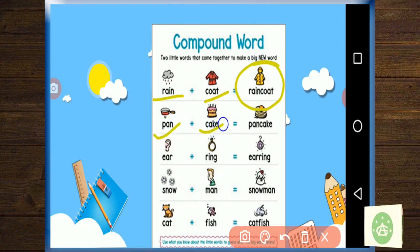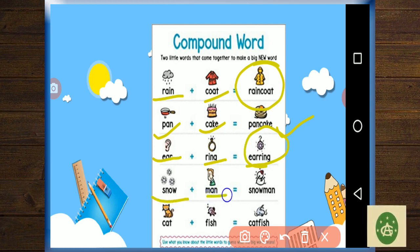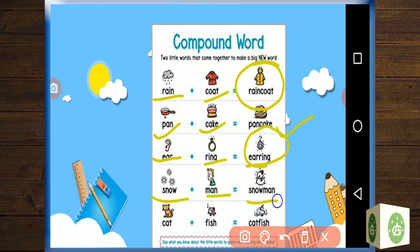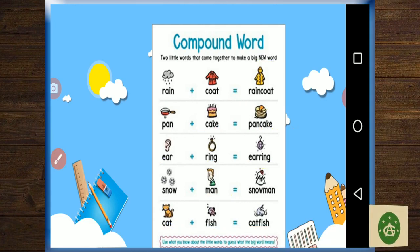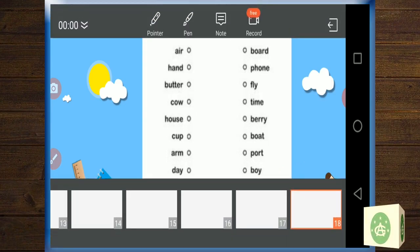We have got some more examples, let's see on the screen. Rain and coat, it can be any coat, but when they are joined together they are becoming raincoat. Then we have got frying pan and cake, pancake means something different. Earring, an earring is what girls wear in their ear. Snowmen, this is the example that we have already done, they become snowman. Catfish, fish, and they become catfish.